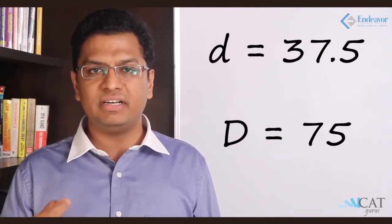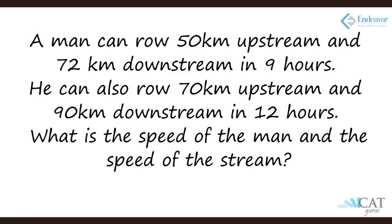Let's look at another example. A man can row 50 kilometers upstream and 72 kilometers downstream in a total of 9 hours. The same person can also row 70 kilometers upstream and 90 kilometers downstream in a total of 12 hours. What is the speed of the man and the speed of the stream? Let's assume the speed of the man rowing is m and the speed of the stream is s. Going upstream the actual speed is m minus s, and going downstream it is m plus s.